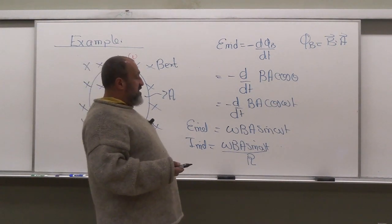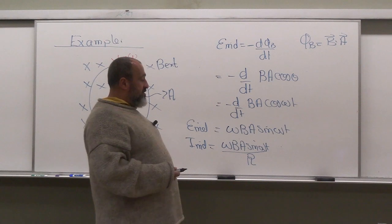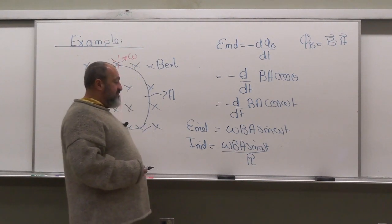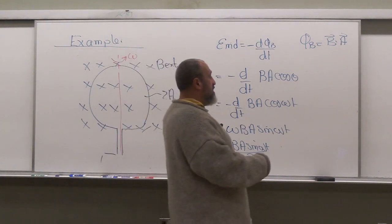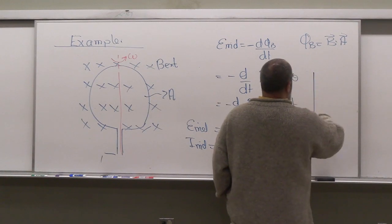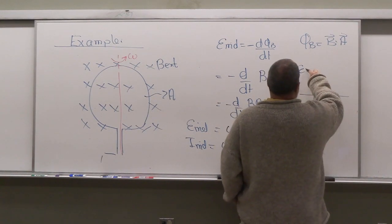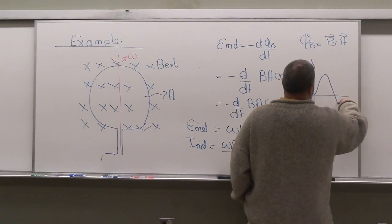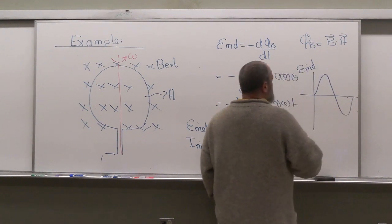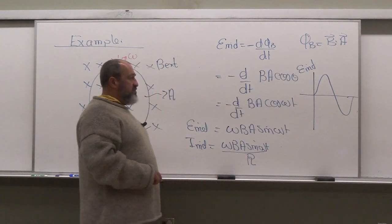So I'd like to think about now is where is the maximum value for this I induced? It's a sine function. Think about how we can make sense of where the maximum value of this epsilon induced is.